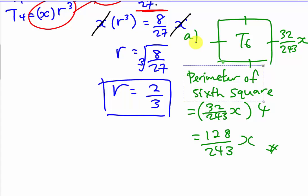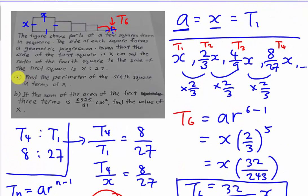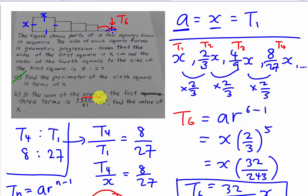This is the answer for Part A. Okay, we already done A. Now we have to go for B. The question says the sum of the area of the first three terms is a given value. The keyword here is area. You have to understand this is area, not side. So normally I will form a new geometric progression for area — it's easier for me to solve the question like this.